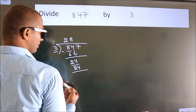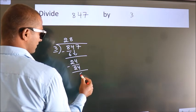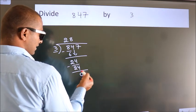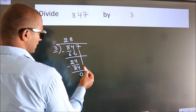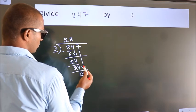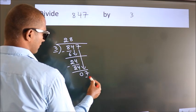Now we subtract. We get 0. After this, bring down the beside number. So, 7 down, giving us 7.